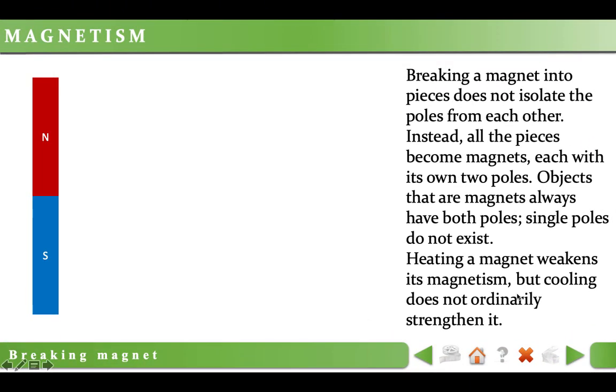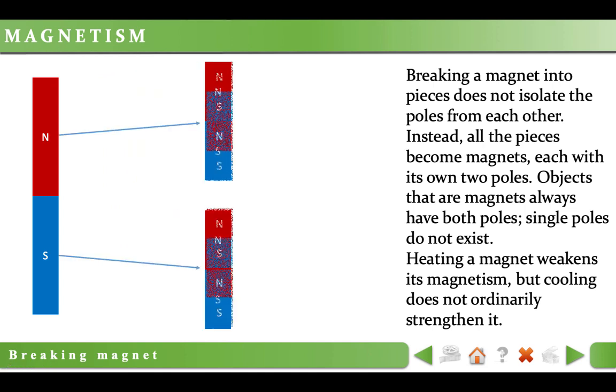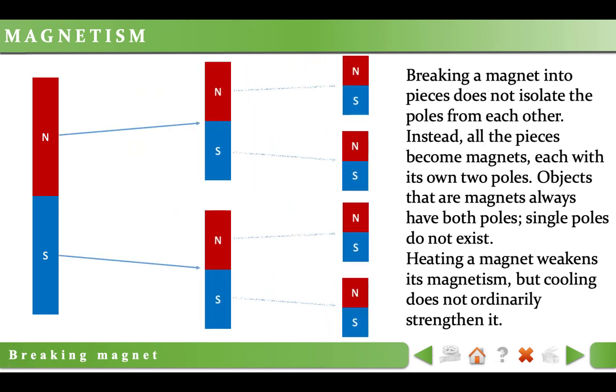Breaking a magnet into pieces does not isolate the poles from each other. Instead, all the pieces become magnets each with its own two poles. Objects that are magnets always have both poles. Single poles do not exist.